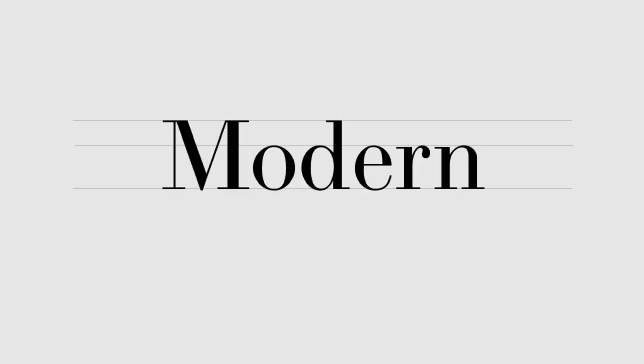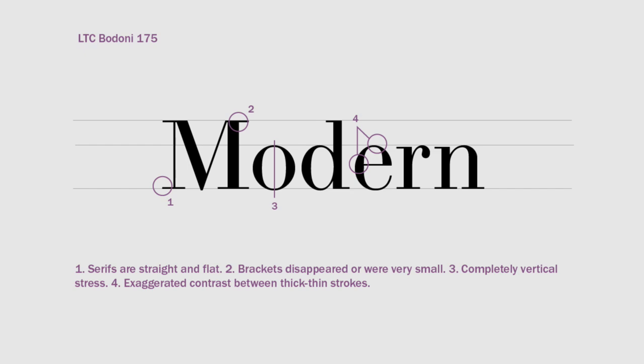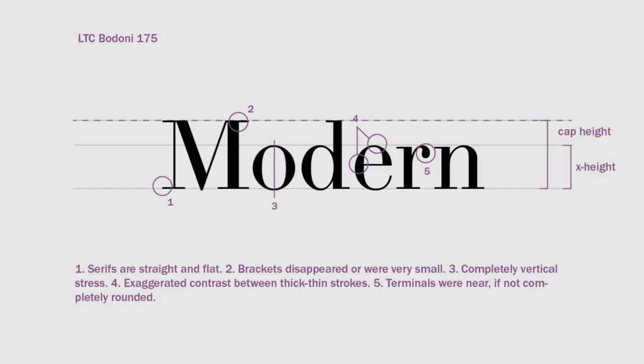The third subcategory is Modern. As printing processes improved in the late 18th and early 19th century, the presses became more and more accurate. The serifs went from curved to completely flat, the brackets disappeared or were very small, and the stress on rounded characters is now completely vertical. The contrast between thick and thin is exaggerated, and the terminals were near or completely rounded. The X height is very tall compared to the cap height. An example of a Modern font is Bodoni.